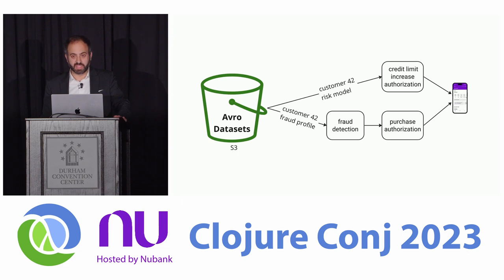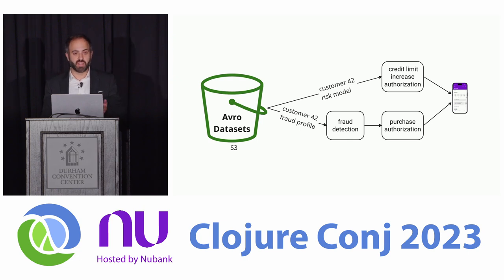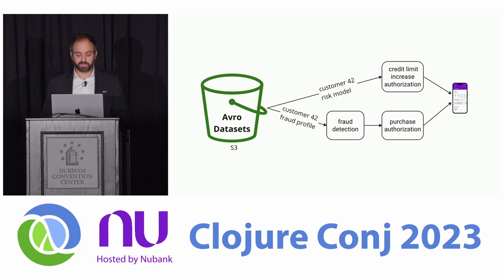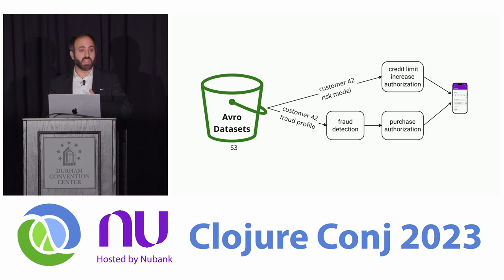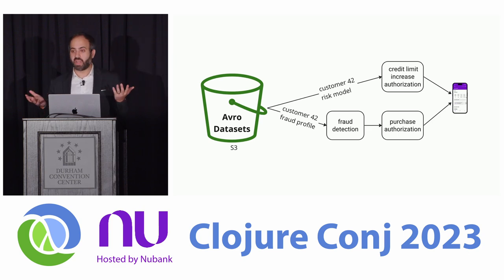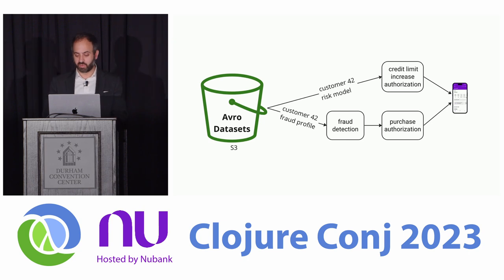The service that authorizes credit limit increases needs to know what the risk model is for a customer, needs to know what the limit should be if it's approved. Other services like fraud detection need fraud profiles for customers. So this diagram is a total lie — you can't just go from an Avro data set. You can't randomly access Avro, and you certainly can't randomly access Avro sitting on S3 because Avro is one of these data formats oriented towards use in a batch context. It's designed for things like Spark, designed for on-mass processing. It just doesn't support random access.